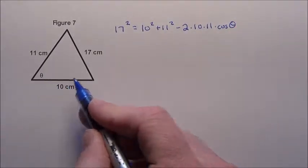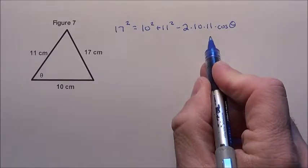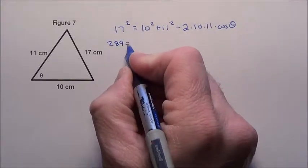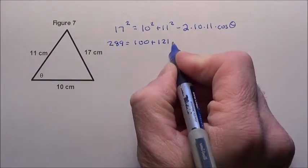That's who we're trying to find, that theta. So this is the unknown. I can calculate all these numbers. Okay, 17 squared, that's 289, equal to 100 plus 121.